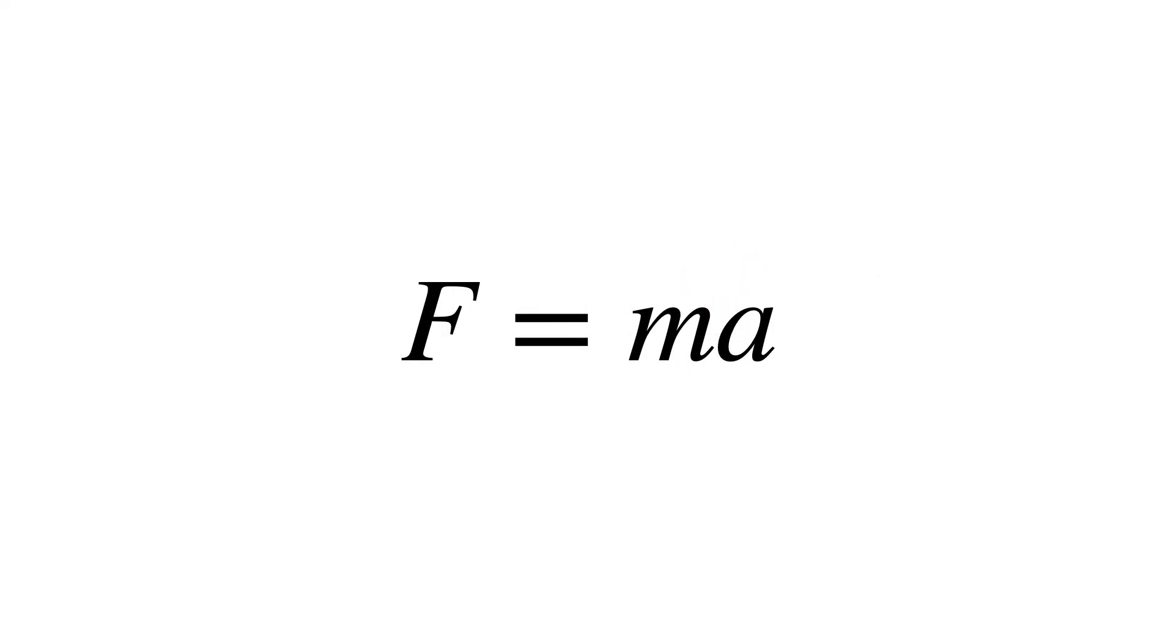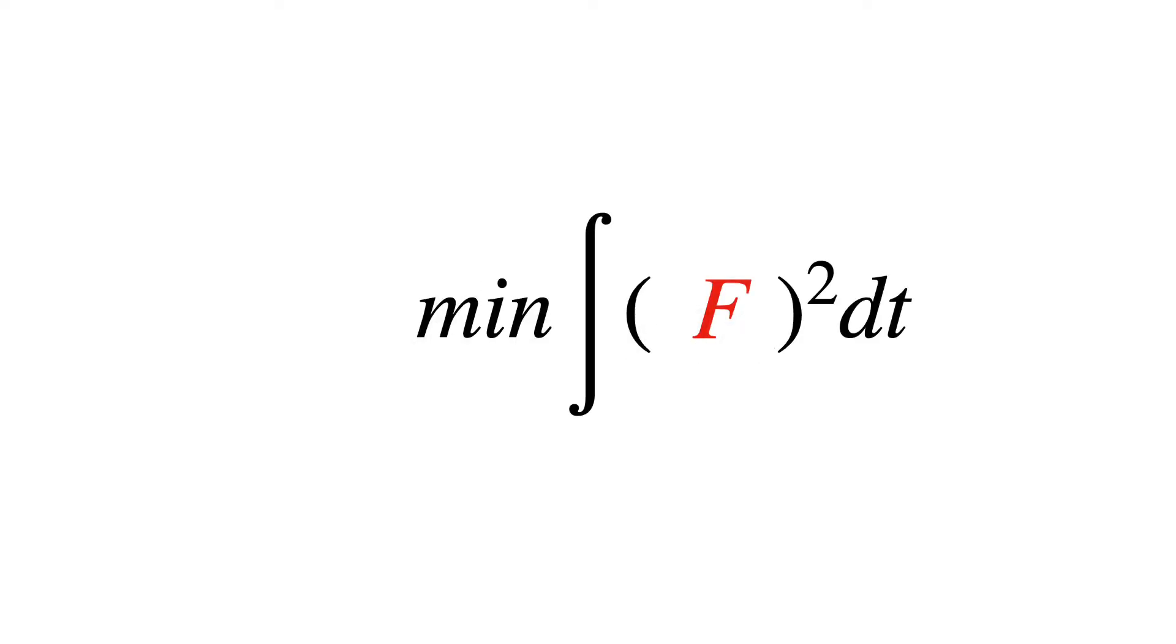This is the same acceleration from Newton's second law, which is proportional to force. So the spline is minimizing the amount of force expended over time. Basically, the bug doesn't have to flap its wings as hard to accelerate this way.